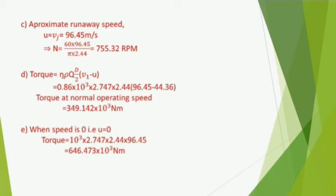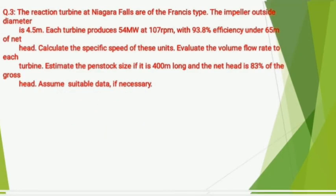Torque at zero speed: since speed u = 0, torque = 10³ × 2.74 × 2.44 × 96.45 = 646.463 × 10³ N·m.